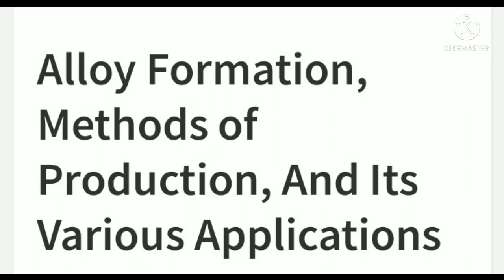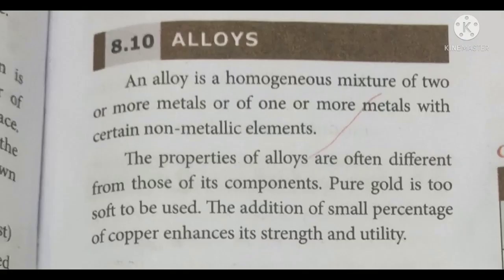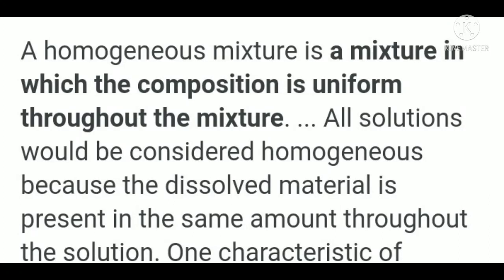First, we can see the definition for alloy. An alloy is a homogeneous mixture of two or more metals or metal with non-metals. Homogeneous means — you already studied in grade 9th the types of mixtures. Homogeneous mixtures means it is uniformly distributed; the solid particles are uniformly distributed over the solvent and it forms a single phase.